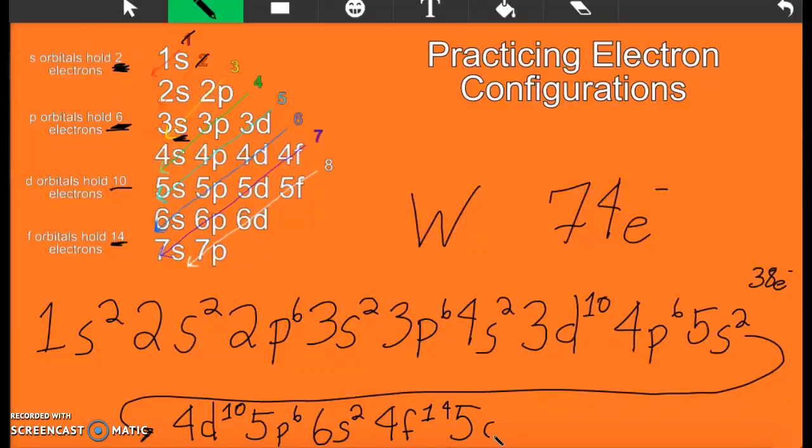5d. And we were at 70. So we only need 4. This big guy right here. That's your electron configuration for tungsten.